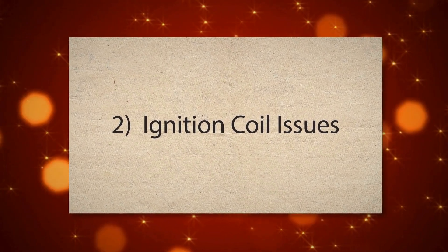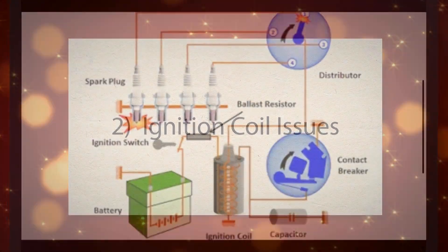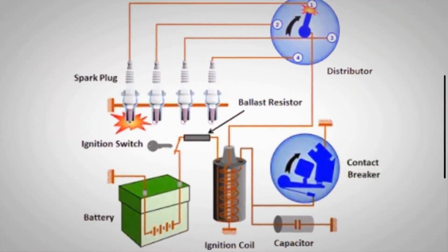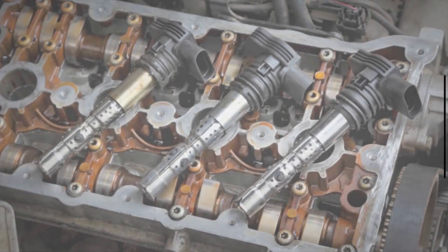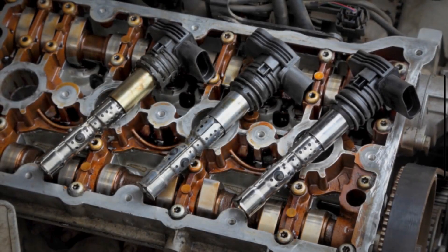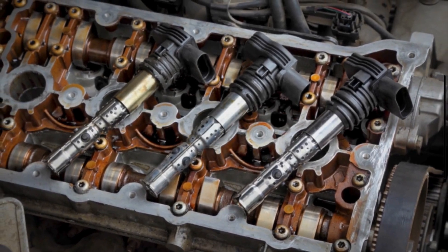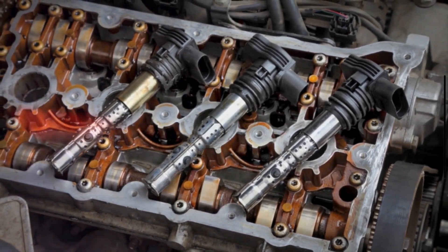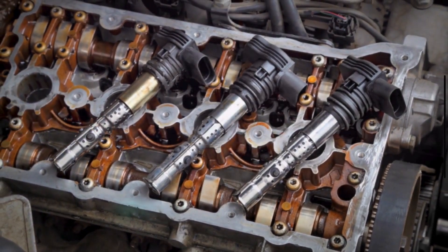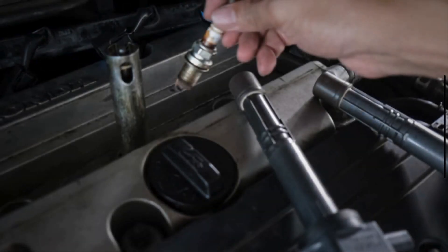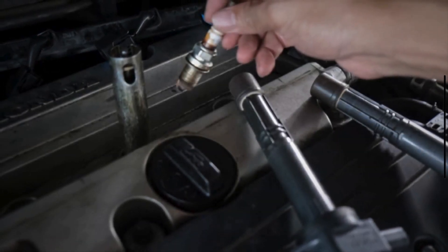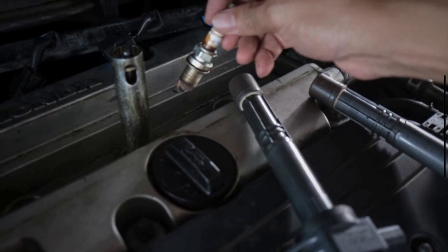The second cause is ignition coil issues. The ignition coil converts the low voltage of the battery to the high voltage needed to create a spark at the spark plug. Each cylinder typically has its own ignition coil in modern engines. A malfunctioning ignition coil for Cylinder 2 can prevent the spark plug from firing correctly, causing a misfire.